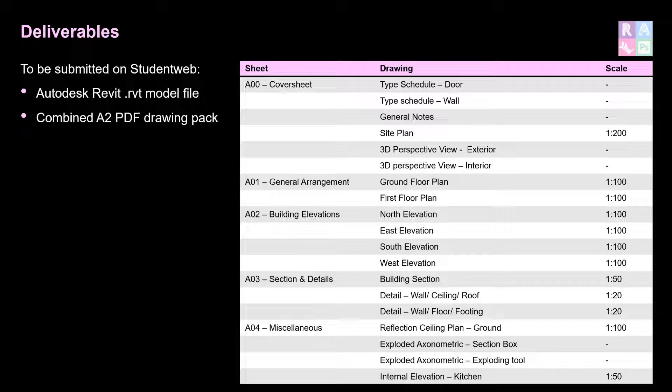The second sheet will be a general arrangements floor plan sheet with both the ground and the first floor plans at a scale of 1:100. The third sheet will be building elevations for north, east, south and west at 1:100.